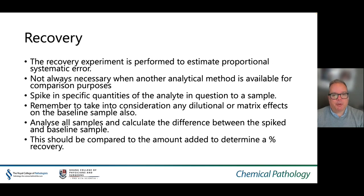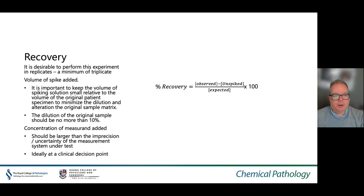A recovery experiment is performed to estimate the proportional systematic error. It is not always necessary when another analytical method is available for comparison purposes. You spike specific quantities of an analyte into the sample, remembering to take into consideration any dilutional or matrix effect on the baseline sample. Analyse all samples and calculate the difference between the spiked and baseline samples; the results should be compared to the amount added to determine the percentage recovery. It is desirable to perform this experiment in replicates — usually a minimum of triplicate analysis. When taking into account the volume of spike added, it is important to keep the volume of the spiking solution small relative to the volume of the original patient specimen, to minimise any matrix effect.